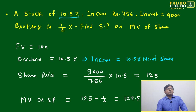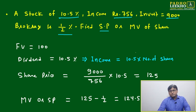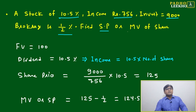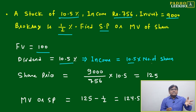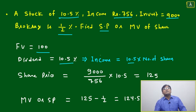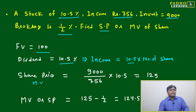Let's try a simple example for more clarity. A stock of 10.5% income generates ₹756 total income; total investment is ₹9,000; brokerage is half percent. Find the selling price or market value of the share. Face value is not given, so we take ₹100. Dividend is 10.5%. Income equals dividend multiplied by number of shares. Share price equals total investment divided by total income, multiplied by dividend — this gives the exact market value before brokerage, which comes to ₹125.